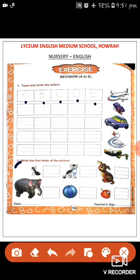As we can see the first picture is this. What is this? This is an ant. Okay. Ant. A for ant. So we will write A.